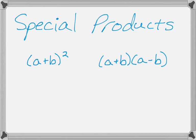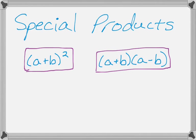When you're working with multiplying binomials, there are actually two special products that come up all the time. And they are this one right here, the quantity a plus b squared, and then this one, which is a plus b and a minus b.